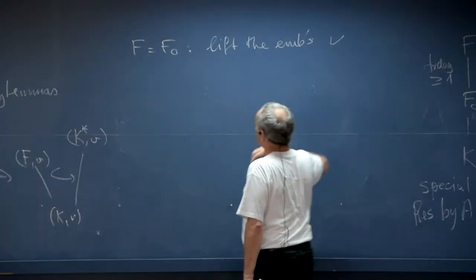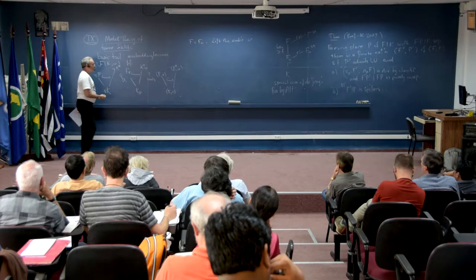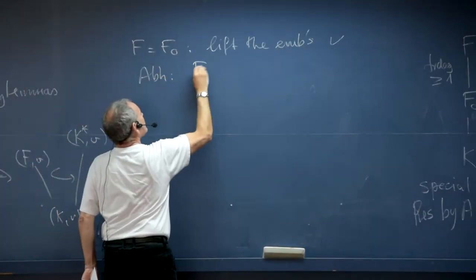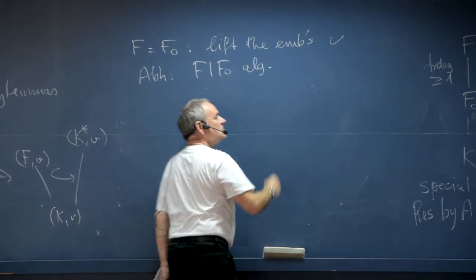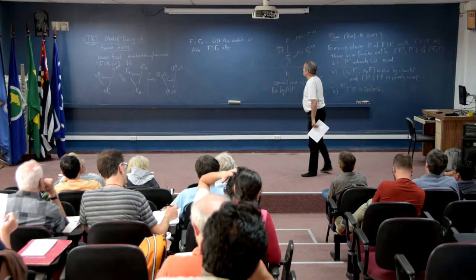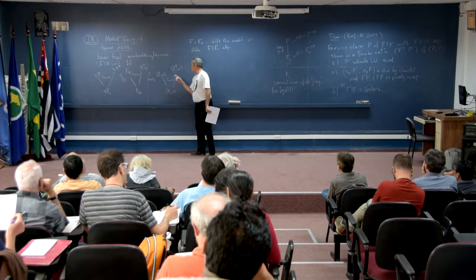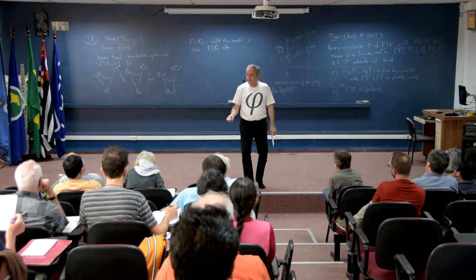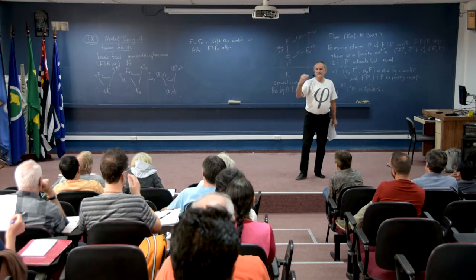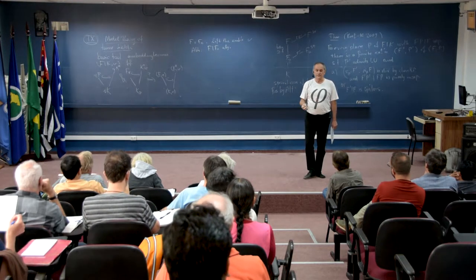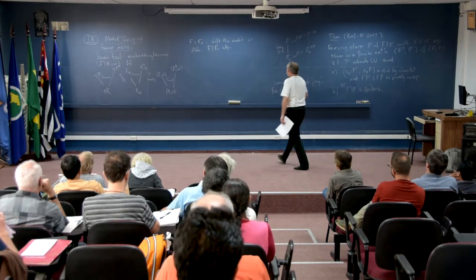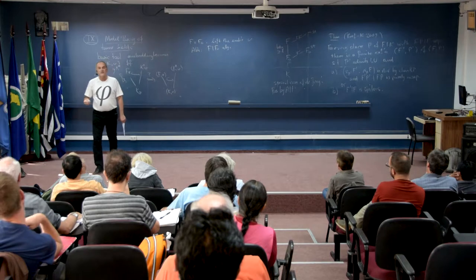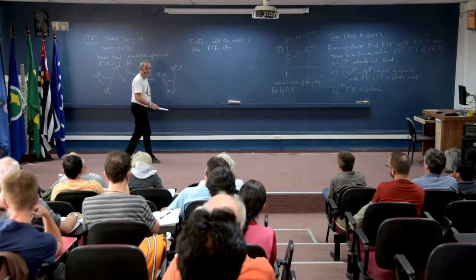For the remaining algebraic extensions F over F_0 in the Abhyankar case: you started with a Hanselian field, and because k* is an elementary extension it is also Hanselian. So you can use Hensel's lemma, but you have no other tool. Hensel's lemma works if the function field is inertially generated — you have to get rid of ramification. This we can do for Abhyankar valuations, and so the whole thing gives you the solution to the embedding problem for the Abhyankar case.